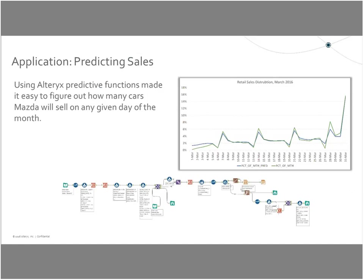They also developed a regression model to tell them on any given day of the month how many cars they would sell. In the past, this was done on gut feel. This new information was used by the accounting team to help determine cash flow forecasts, and the Mazda sales team used it to determine how many cars their region should sell on any given day. This enabled corporate to monitor if cars were on track or off track to sell versus their objective. For example, if a Mazda 3 should sell about a thousand units by the 15th day and isn't — that tells them there's a problem to investigate.